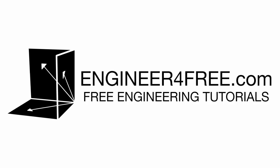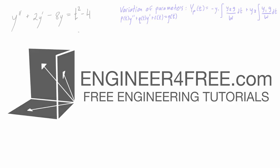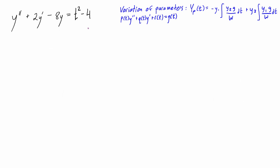Hey, welcome back. This is example number three using the variation of parameters to solve a second order differential equation. We're basically looking for a particular solution to the differential equation, but along the way we're also going to find the complementary solution, and then we can put those two together to get the general solution as well.